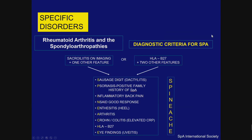There are diagnostic criteria for SPA introduced by the SPA International Society, illustrated on this slide. For example, sacroiliitis on imaging plus one other feature, or HLA-B27 plus two other features. The features can be remembered with the mnemonic SPINE ACHE — I'm not quite sure how it came out so nicely with that particular abbreviation, but those are the diagnostic features.